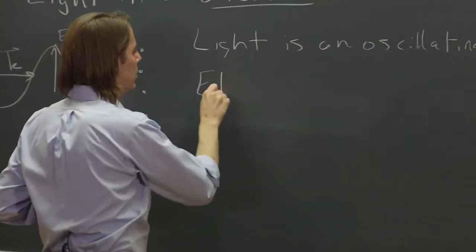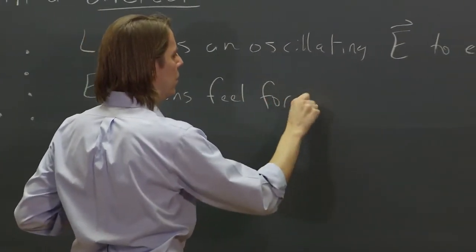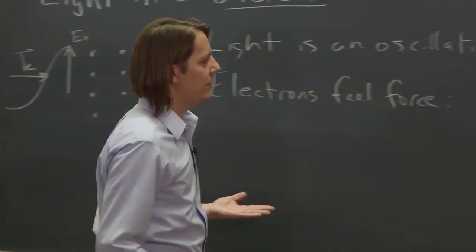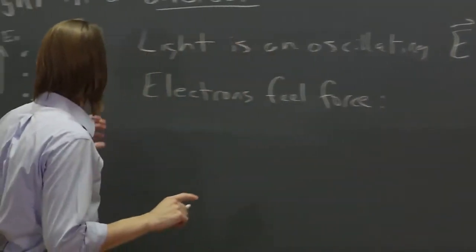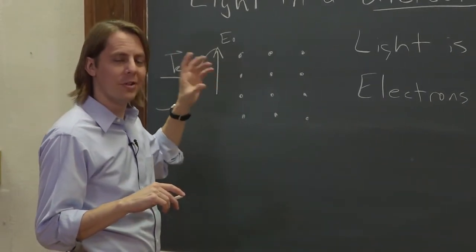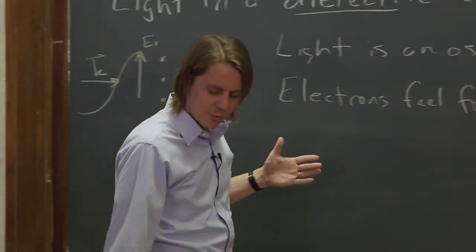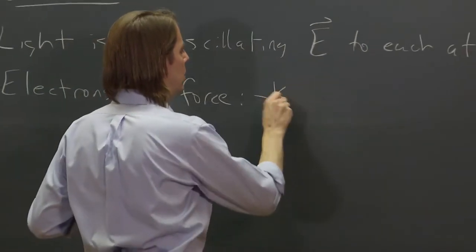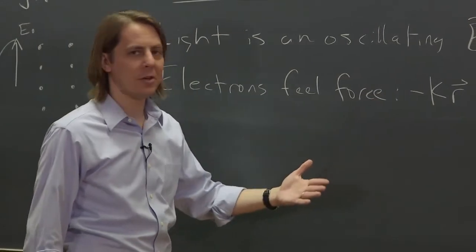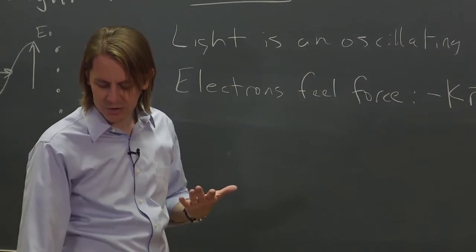The electrons feel a force. So we can apply Newton's second law to the electrons. So if the electron is pushed away from its nuclear charged nucleus, it'll be pulled back. That's kind of like a spring force. So we can write minus K R. We call it K because it's kind of like a spring. We'll call it capital K. To make it clear, we don't mean literally a little Hooke's law spring. We just mean something that behaves kind of like a spring.